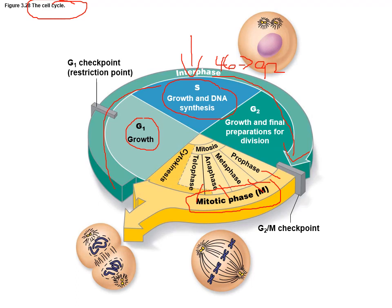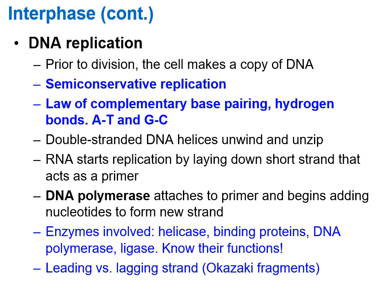We're going to spend a little bit more time talking about DNA replication — understanding the process of going from 46 to 92 chromosomes. DNA replication is what we call semi-conservative replication. What that means is that when you go from one strand to two strands, the two daughter strands are going to be half old and half new. Here's a rough drawing of a ladder representing the original DNA strand. In DNA replication, the DNA will unzip, exposing the sequence of letters: A, T, G, and C.